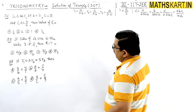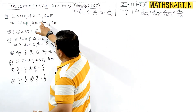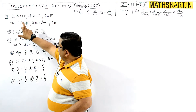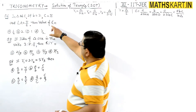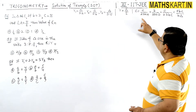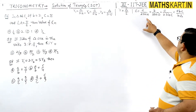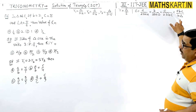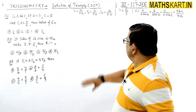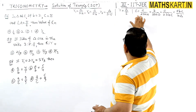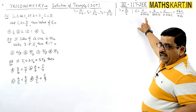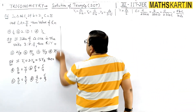इसमें b और c side है, a side नहीं है, लेकिन angle A given है और capital R की requirement है। Capital R, a/2sinA से निकाल सकते हैं या abc/4Δ से भी। Better है कि capital R को a/2sinA से निकालें।